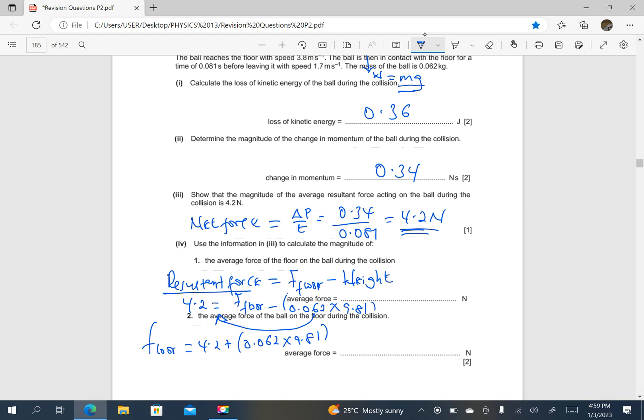The resultant force is going to be the difference between the force exerted by the floor on the ball minus the weight of the ball downwards. And since we already have the resultant force, then you see that the weight goes the other side and then we have addition. I think that is made clear. Have a blessed day, thank you.